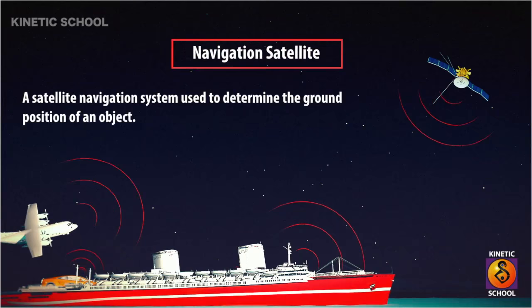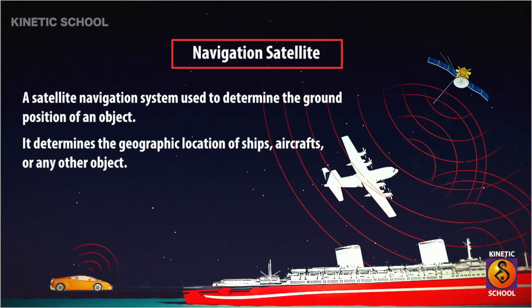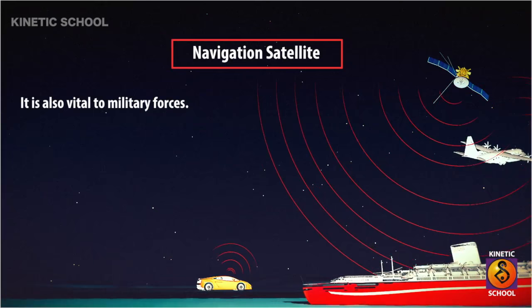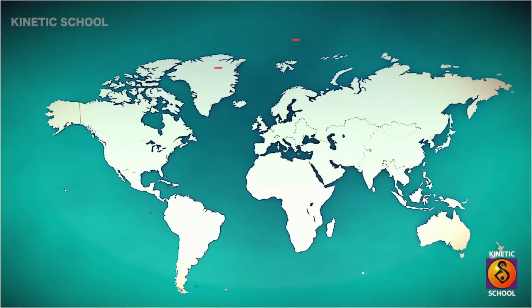A satellite navigation system is used to determine the ground position of an object. It determines the geographic location of ships, aircraft, or any other object. It is also vital to military forces, often used for gathering intelligence, for military purposes, or as a military weapon.